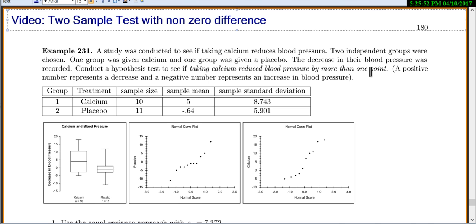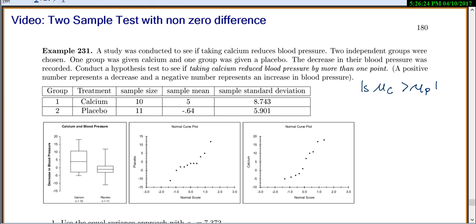This would be an example if you have something where it's not really worth going out of your way to do something unless it's going to decrease it by at least one point. So you don't just want to see a difference, you want to see a difference of at least so much. We want to know if the mean if you take calcium is going to be bigger than the mean if you take a placebo by at least one. The way that you write that is if you take the mean of calcium minus the mean of the placebo, that should be bigger than one.